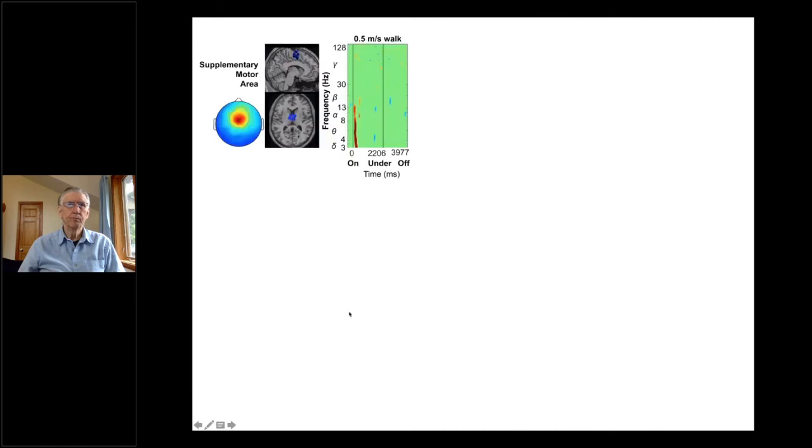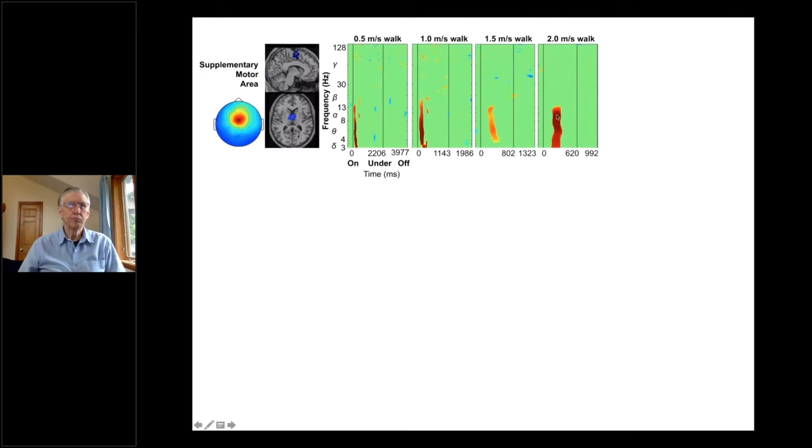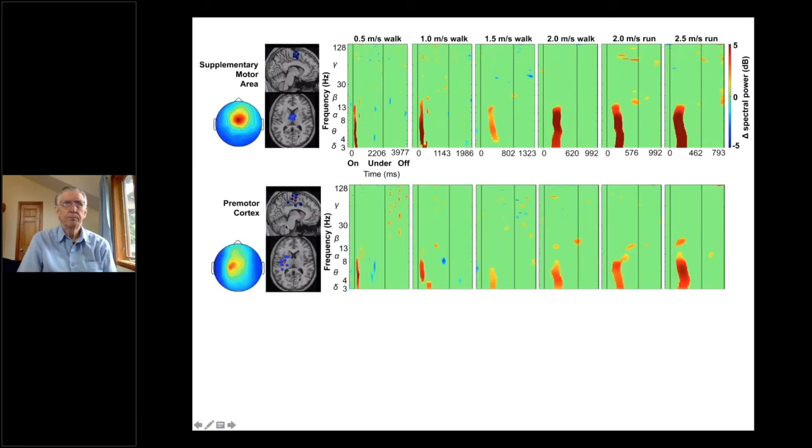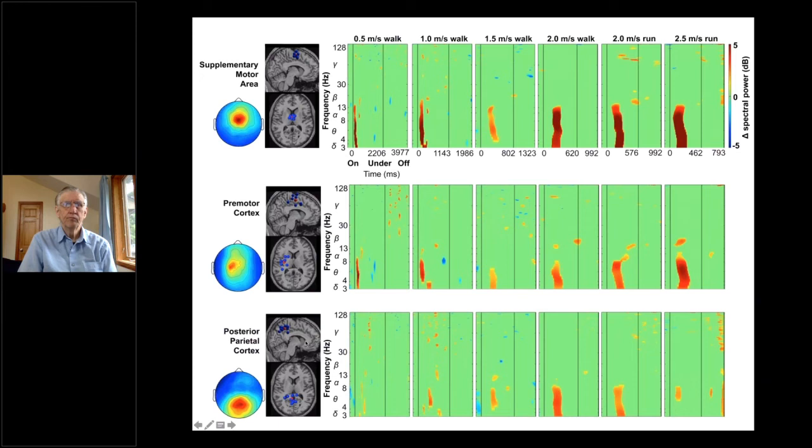Because I collected all of these data at different speeds, I'll just quickly run through the response at all the speeds, but it turns out to be pretty similar. We're looking at supplementary motor area, 0.5 meters per second. You see the response, synchronization soon after the appearance of the obstacle on the treadmill. You see a very similar response at all of the walking speeds, which is encouraging. And you see it all the way up into running. So it appears, independent of speed, you're going to see a fairly consistent response in terms of frequency content. There are some differences in timing, which I'll get into in a bit. And then you see something very similar in pre-motor cortex and also posterior parietal cortex.